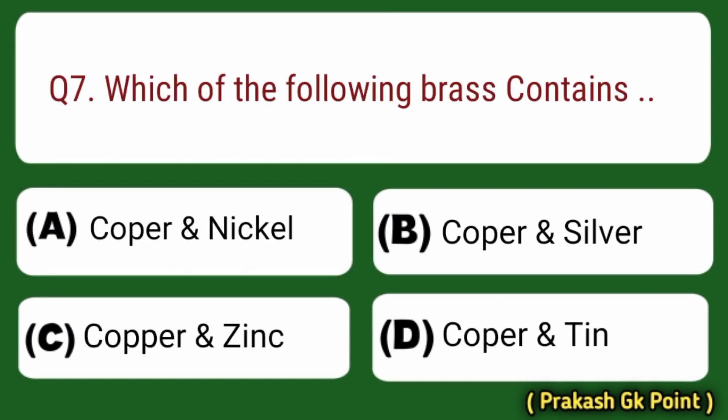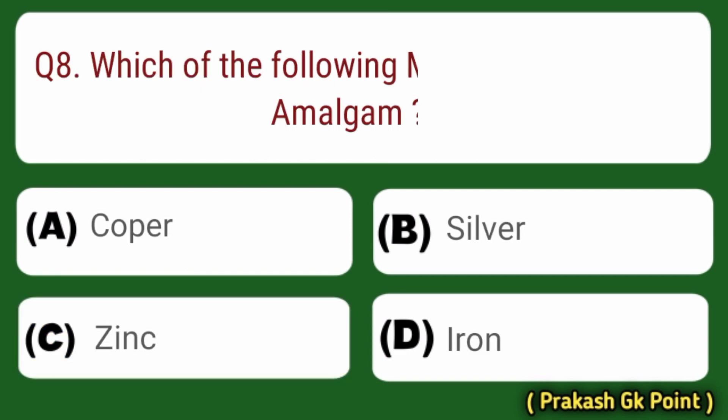Next question: which of the following does brass contain? Answer: Option C — Copper and Zinc.